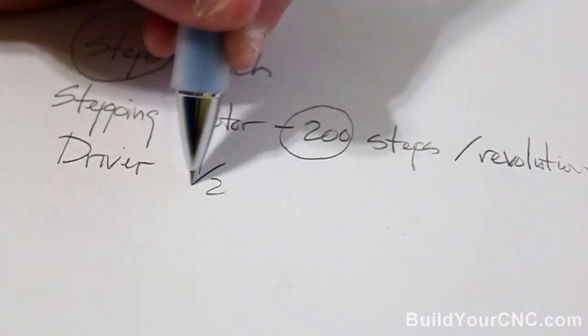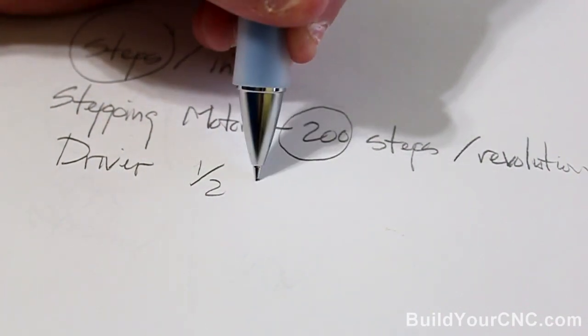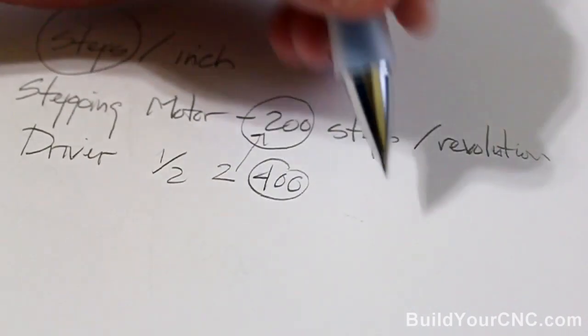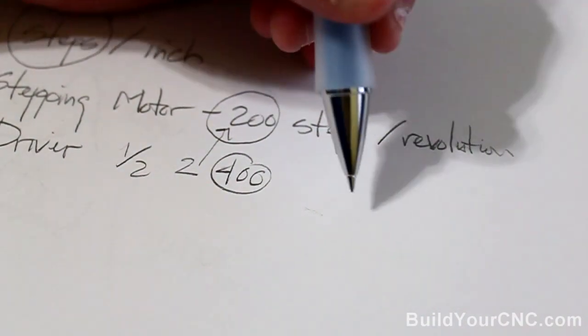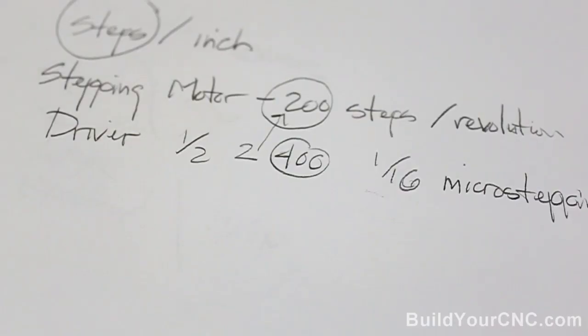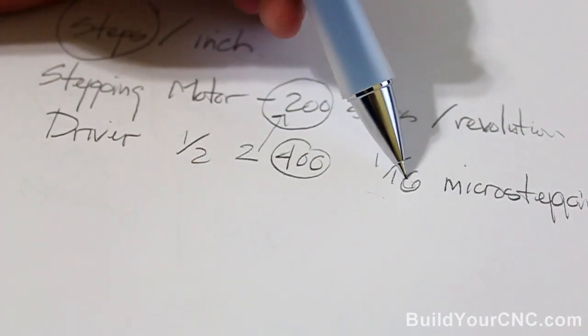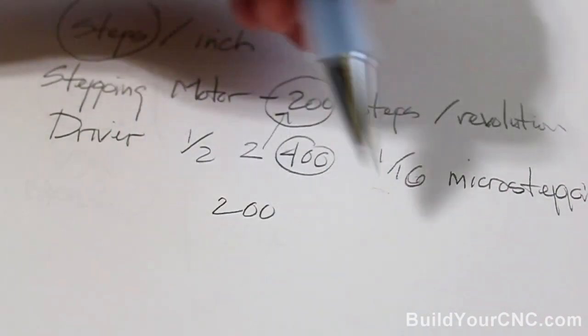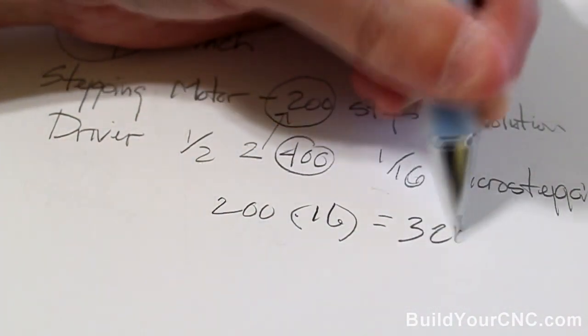So you can go, if it's the driver produces, you can actually set it to produce one half steps or that means two steps per each of these steps. So then you'll have 400 steps. You can also increase it to one eighth or one quarter or one sixteenth. I generally for the x and y axes, I go with one sixteenth microstepping. So for this example, let's pretend that I am setting the driver to one sixteenth steps, microstepping, and it would be 16 steps for each of these steps. So what we have to do is we have to take the 200 and multiply it by 16.